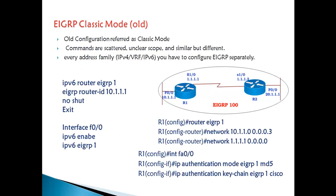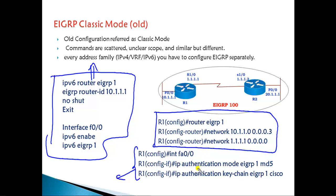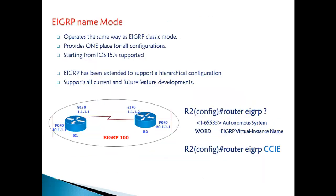If you verify configurations in classic mode, IPv6 is configured separately under a separate routing process, and IPv4 has its own separate process like 'router eigrp 1'. Interface-level configurations like authentication and summarization come in a different way. You can see there are separate IPv6 routing configurations and separate IPv4 configurations, plus interface-specific configurations. If you're running two different autonomous systems on the same router, like EIGRP 100 and EIGRP 200, they all come under different routing configurations.